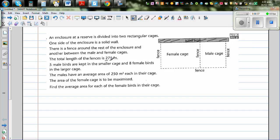The total length of the fences is 275 meters. So let's start by writing some variables. This is unknown, so I'll call this Y. So this is also Y and this is also Y.